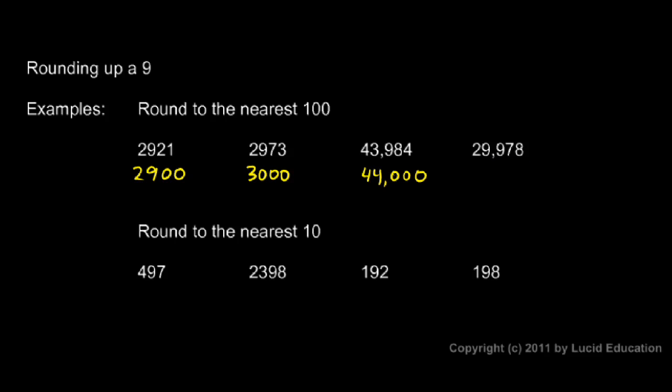Here, 29,978. We want to round to the nearest hundred. That's the 9 there, the second 9.